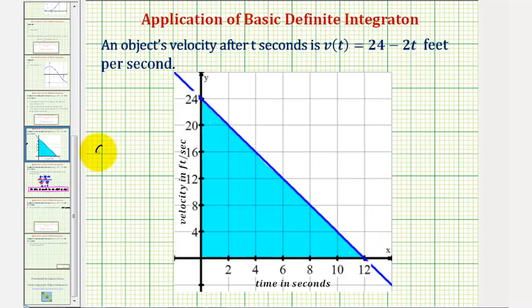But we also know that distance equals rate times time. Notice how we have the rate or velocity along the vertical axis and the time along the horizontal axis. Which means if we find the area under the velocity function and above the x-axis over this interval, it would give us the distance the object travels from t = 0 to t = 12.